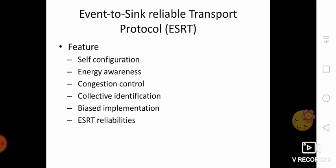Next is Event-to-Sink Reliable Transport Protocol — ESRT. This protocol provides a solution for transport layer issues. It provides reliable event detection and congestion resolution with minimum energy consumption. This protocol offers event-to-sink reliability rather than end-to-end reliability. This can be achieved when data about the event is carried reliably to the sink node. The first feature is self-configuration: ESRT supports dynamic topology formed by WSN and achieves flexibility in self-configuring the network when topology changes.